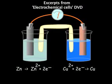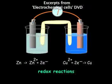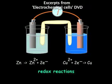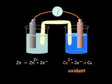Remember that chemical reactions involving a transfer of electrons are known as redox reactions. In a redox reaction, the substance that accepts electrons, the copper ions, is called the oxidant. The substance that donates the electrons, the zinc metal, is called the reductant.